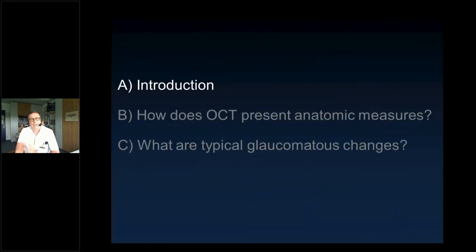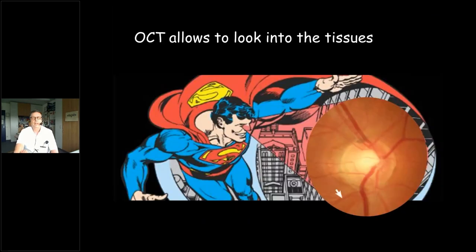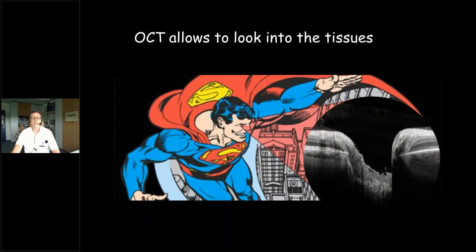First we start with an introduction, then we deal with how OCT presents anatomic measures, and then what are typical glaucomatous changes. Normally with ophthalmoscopy we see the surface of the optic disc and retina, but using OCT we become able to look into the tissue and see all anatomic structures we are interested in, in order to diagnose and follow up glaucoma.